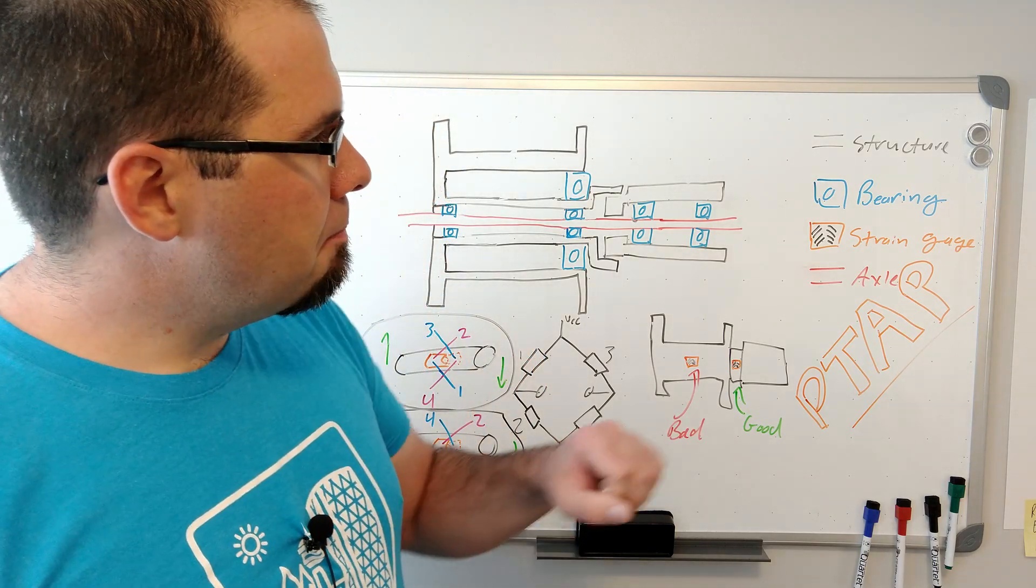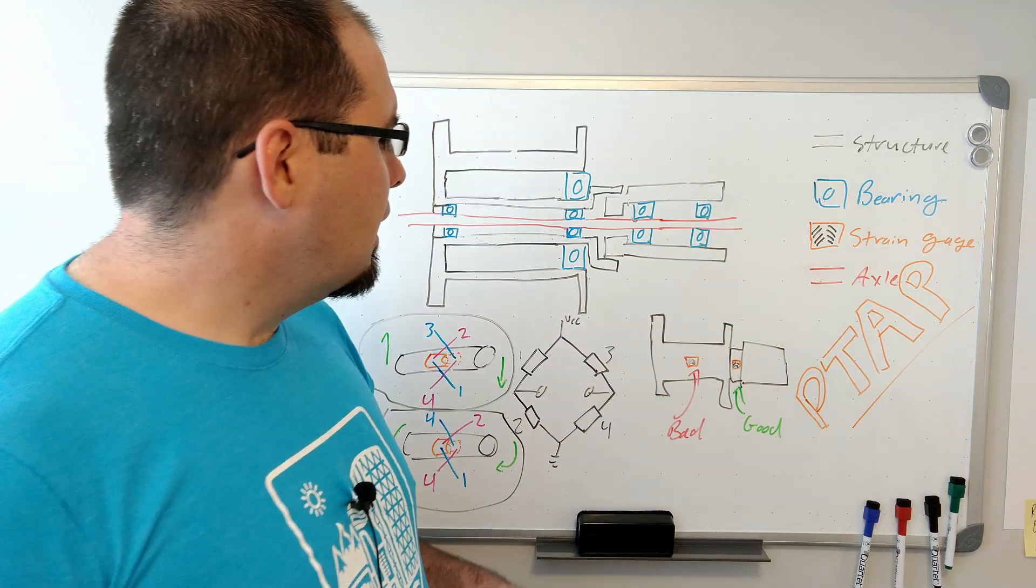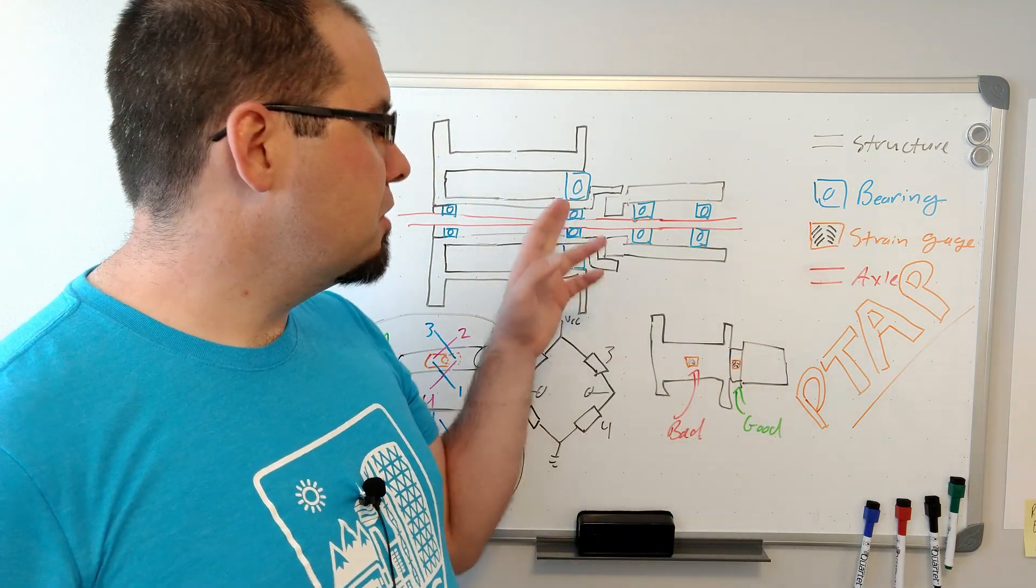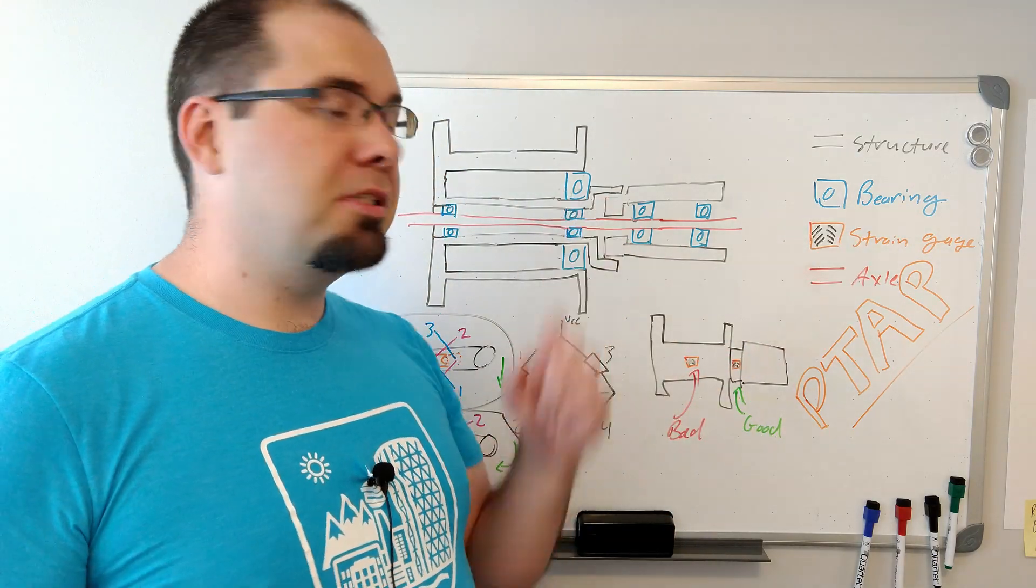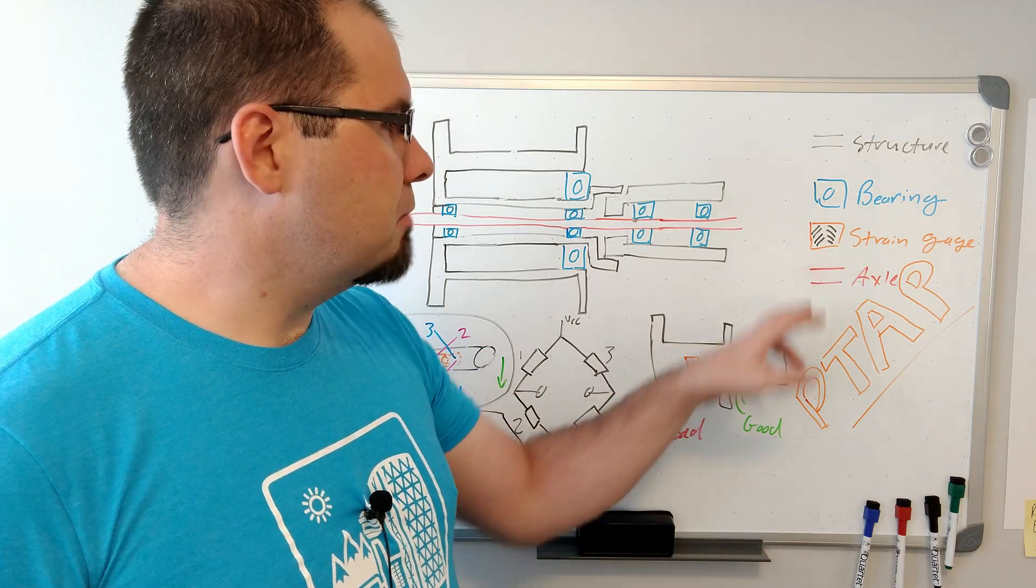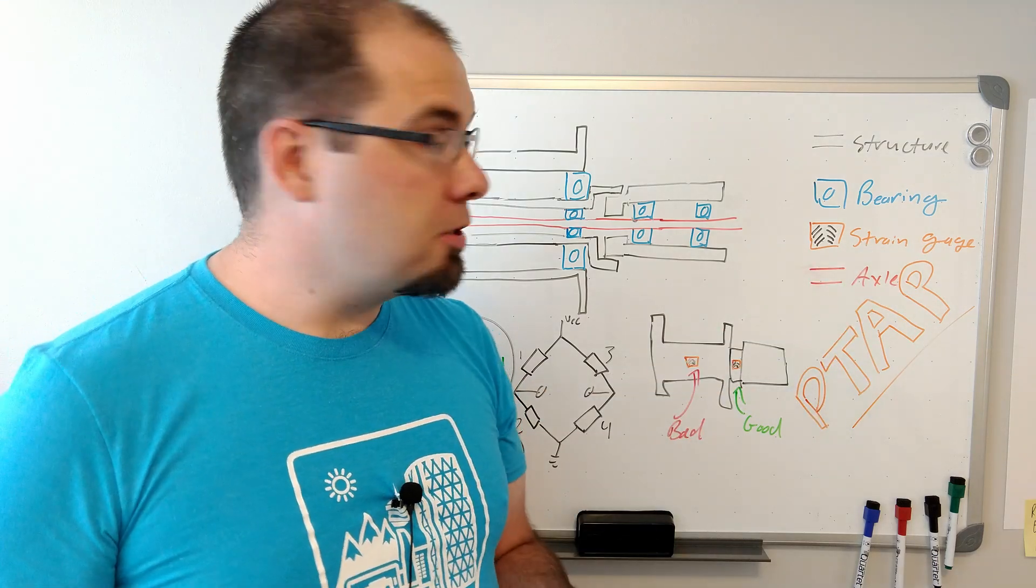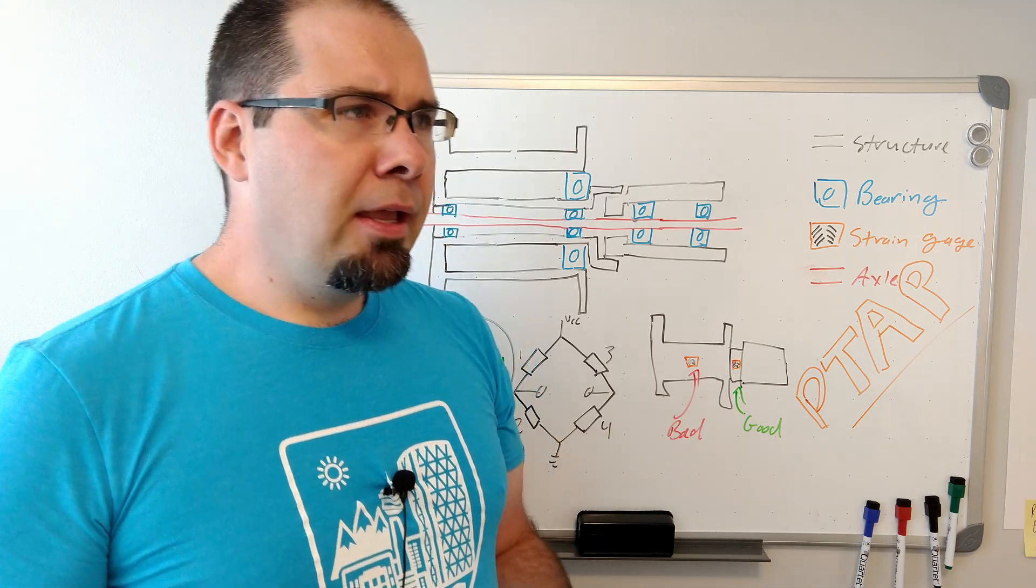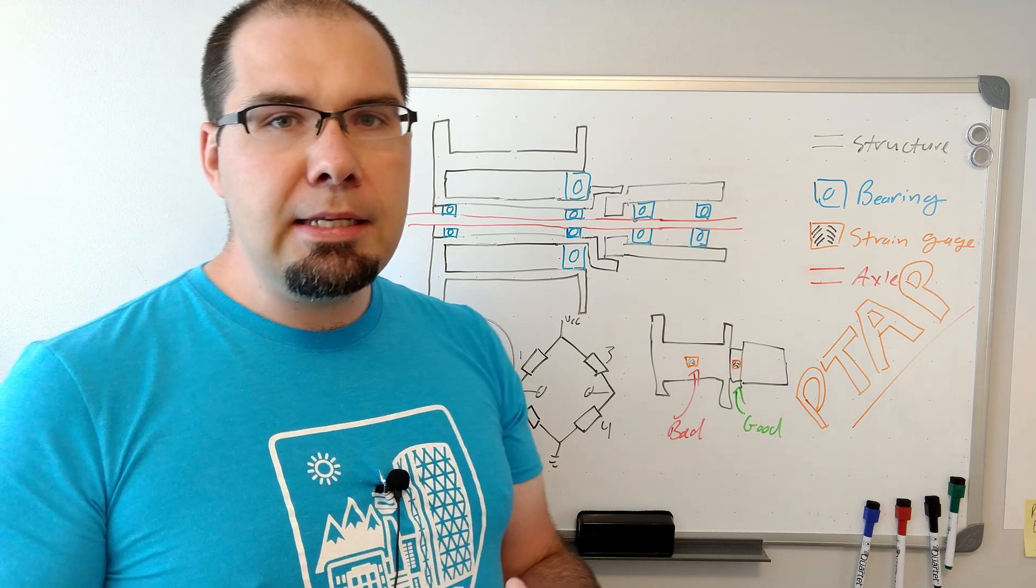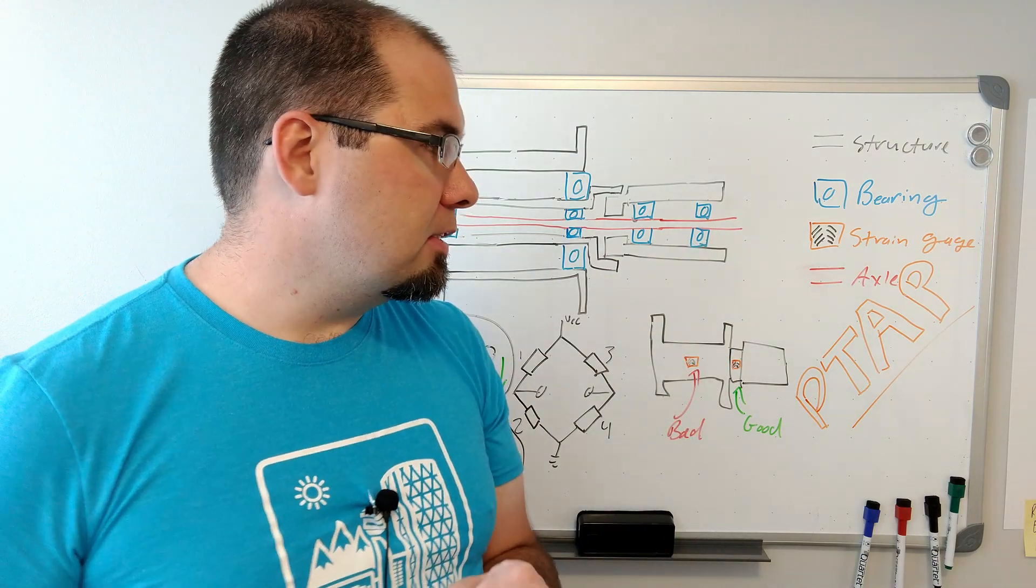In the case of PowerTap, I've got a little bit of a legend here for these pictures where black area is metal structure, blue is bearings, and you'll notice there's an extra bearing hanging out here. Strain gauges in black and orange, and axle in red. The axle is a stationary part of this design.